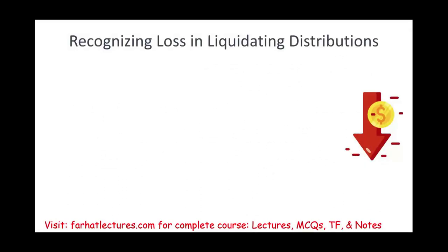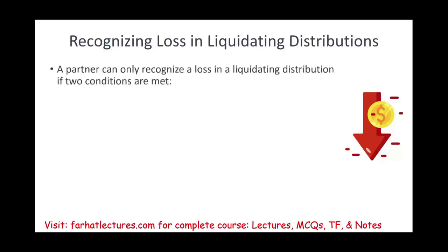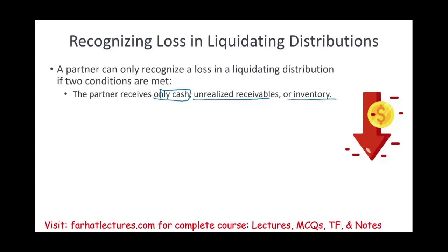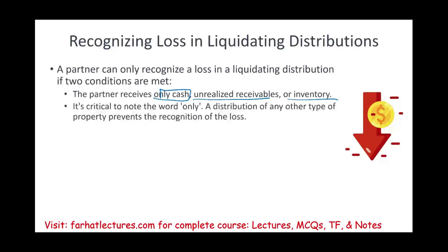Let's assume we have a loss — recognizing a loss in a liquidating distribution. When do we have a loss in a liquidating distribution? We can only recognize a loss if two conditions are met. First, the partner receives only cash, unrealized receivables, or inventory. It's critical to note the word 'only' — a distribution of any other type of asset would eliminate the loss. So we are only receiving cash and hot assets and no other third type of assets.